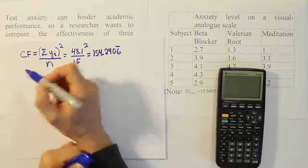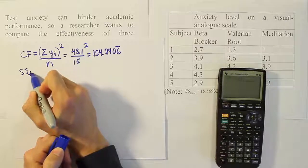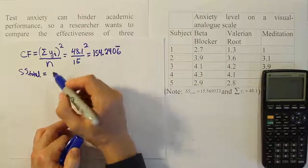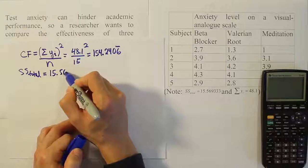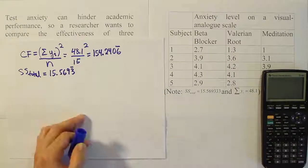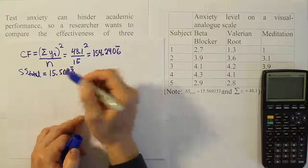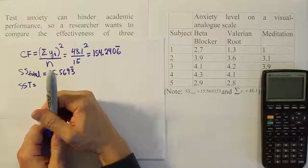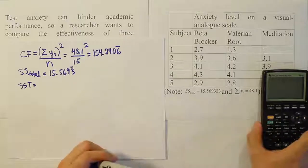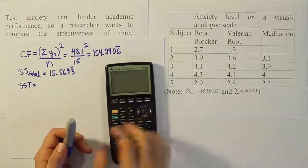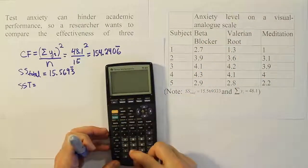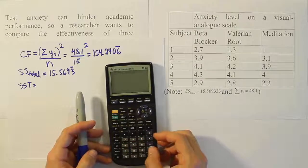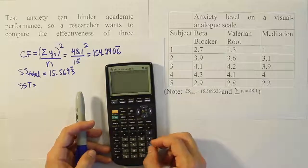The next step is the total sum of squares, SS Total. The problem gives that to us as 15.5693 repeating. From there we compute the sum of squares for treatment, SST. To do SST, we need the treatment totals — the column totals — squared, divided by the number of values in each column. So we sum up the first column: 2.7 + 3.9 + 4.1 + 4.3 + 2.9.